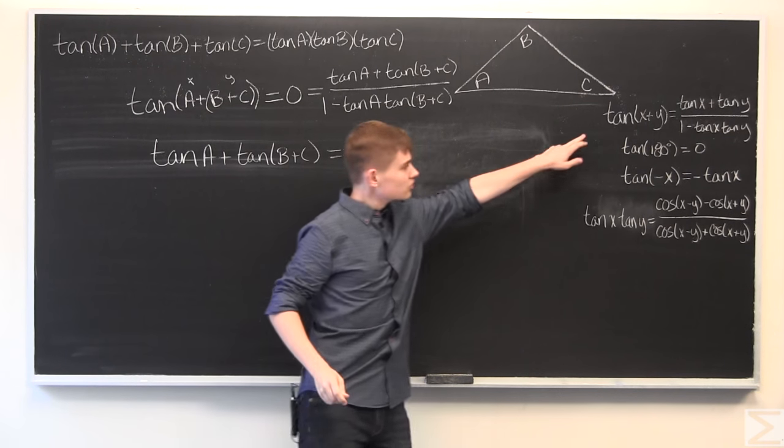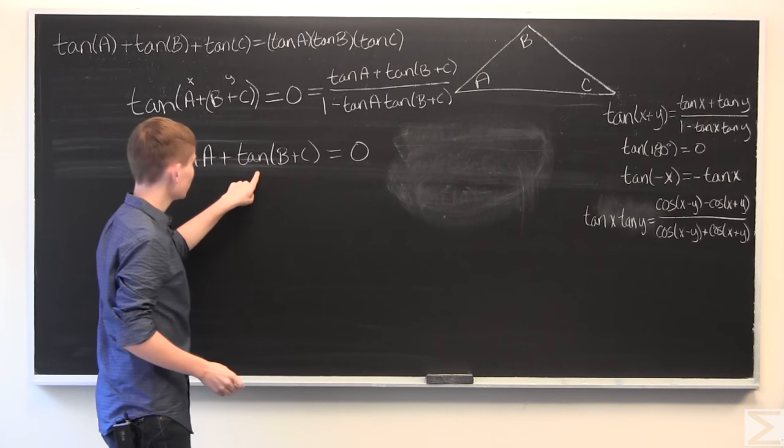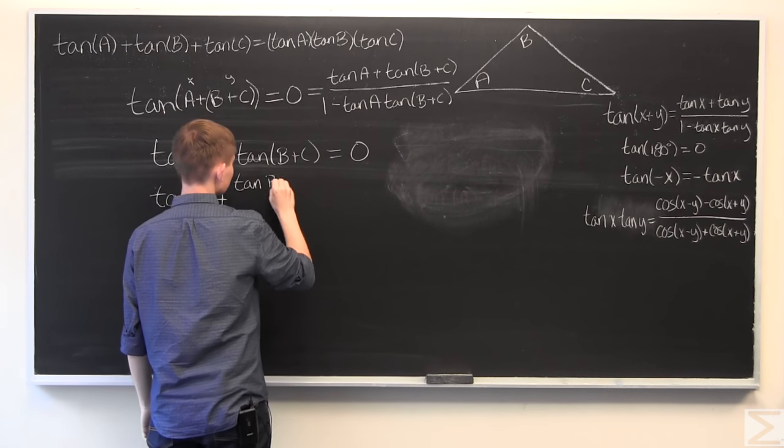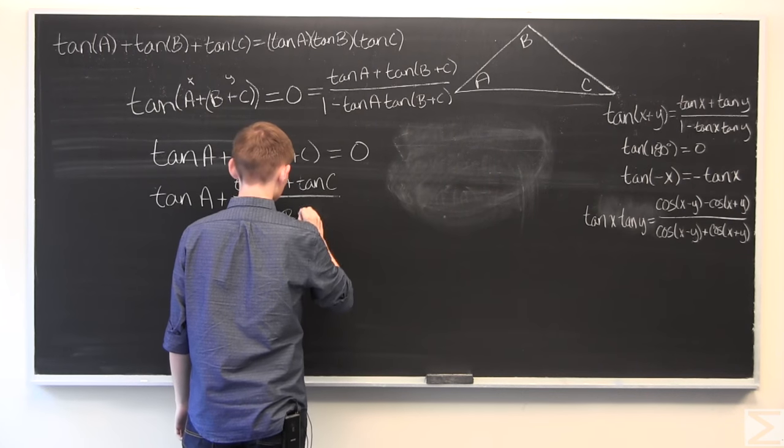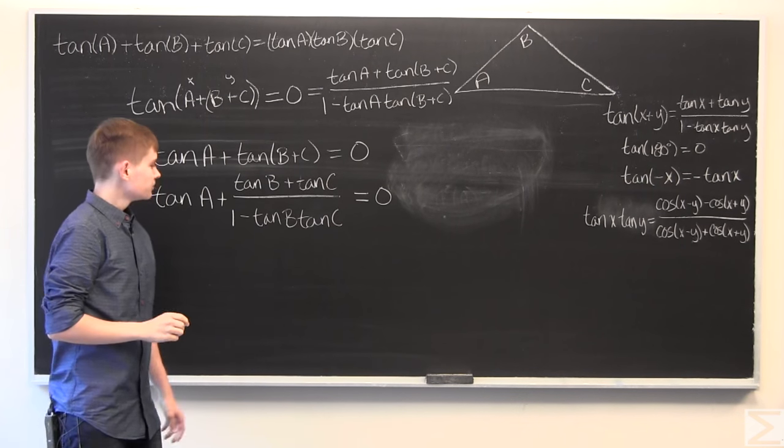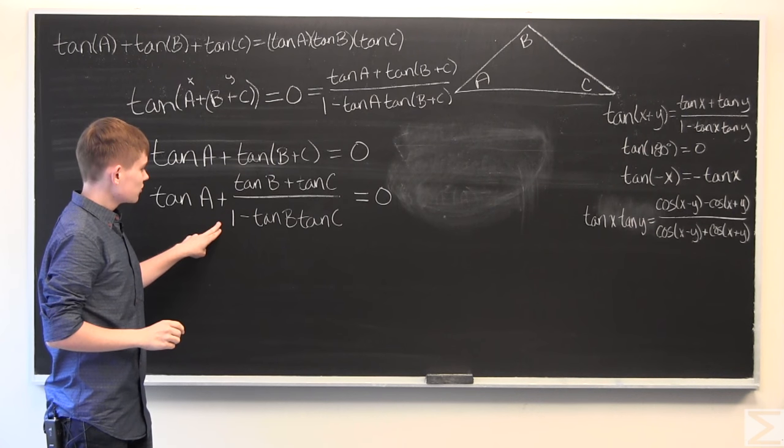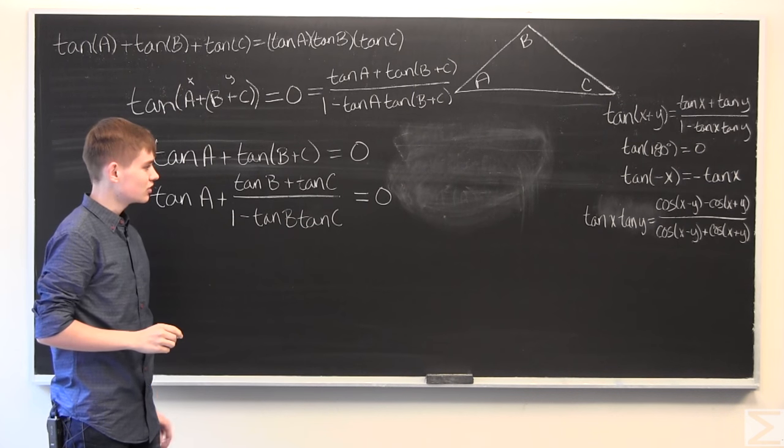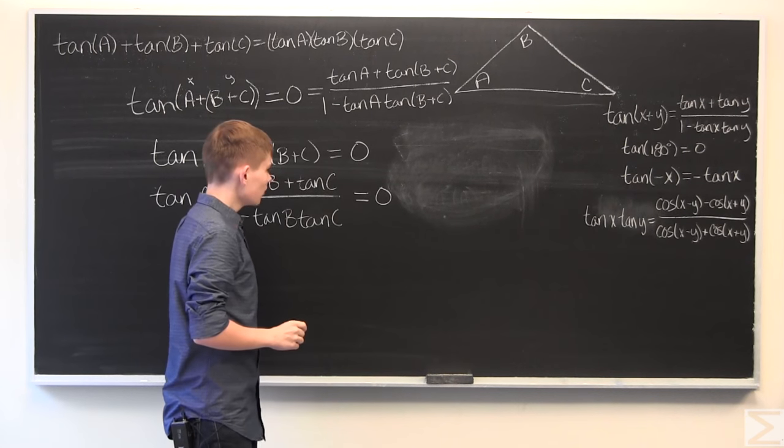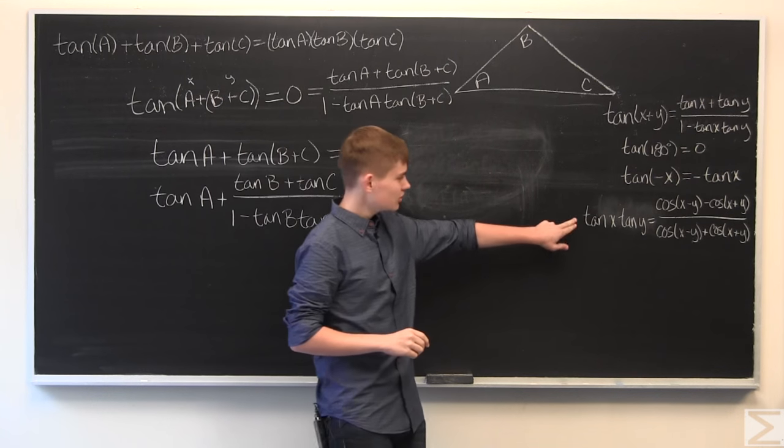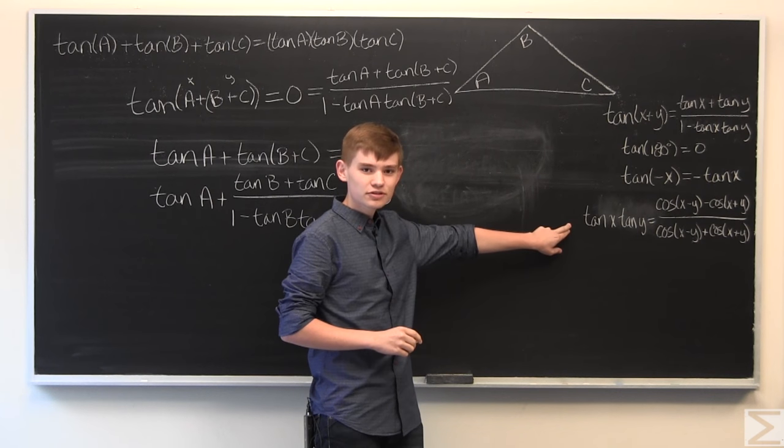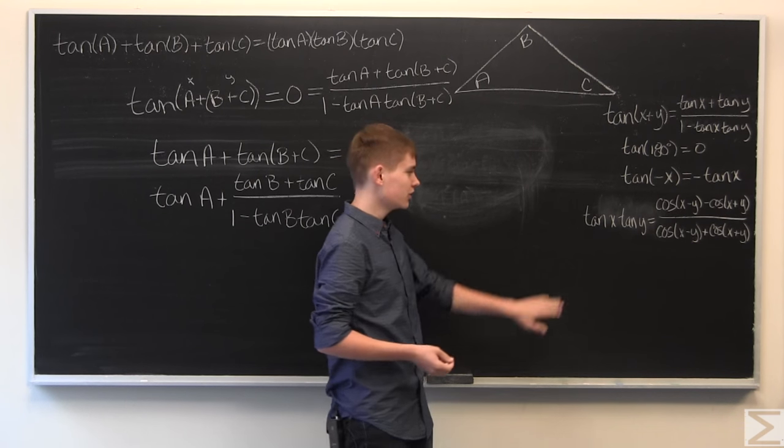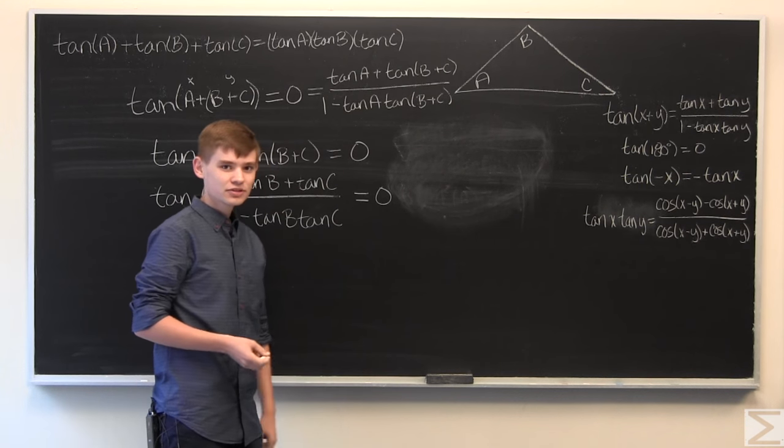And, what we're going to do is use the same identity as before on tangent of B plus C, which I will write out now. Okay. I've written this out, and we need to show that one minus the product of tangent B and tangent C is not equal to zero, which I am not going to do for you on the board. You can try it for yourself, or you can go to the link in the description to the solution transcript.